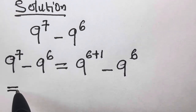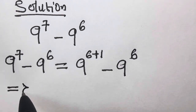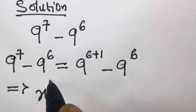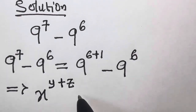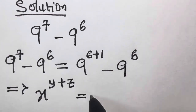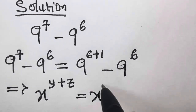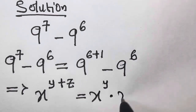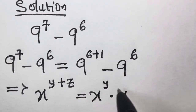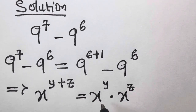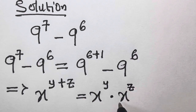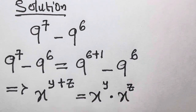So let's recall that wherever we have x raised to the power y plus z, this equals x raised to the power y times x raised to the power z. This is the multiplication law — when numbers with the same base are multiplied, their powers are added.